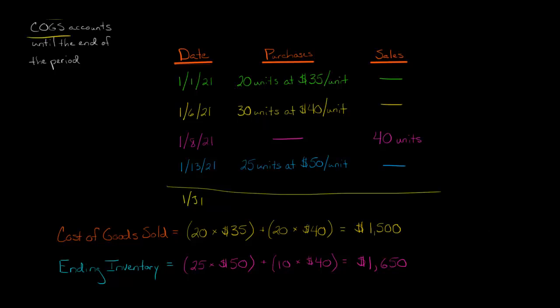So then we're going to have 25 units times $50 per unit in ending inventory. And then 10 out of this 30, so we've got 10 at $40 each. If you add those together, you're going to end up with $1,650 in the ending inventory.